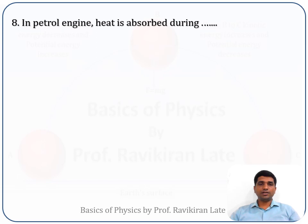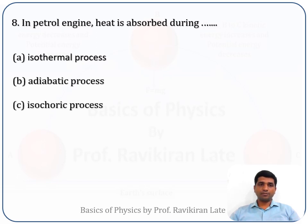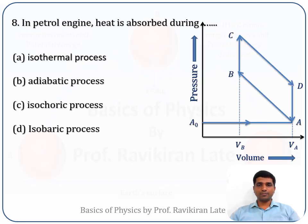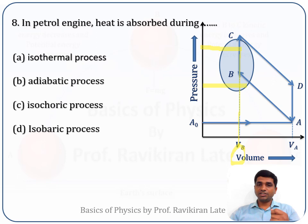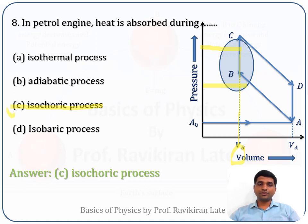The eighth question: in a petrol engine, heat is absorbed during — isothermal, adiabatic, isochoric, or isobaric process? In the petrol engine cycle, heat is absorbed during curve BC. At point B, the volume remains constant while pressure changes. A process during which volume remains constant is called an isochoric process. The correct answer is option C, isochoric process.